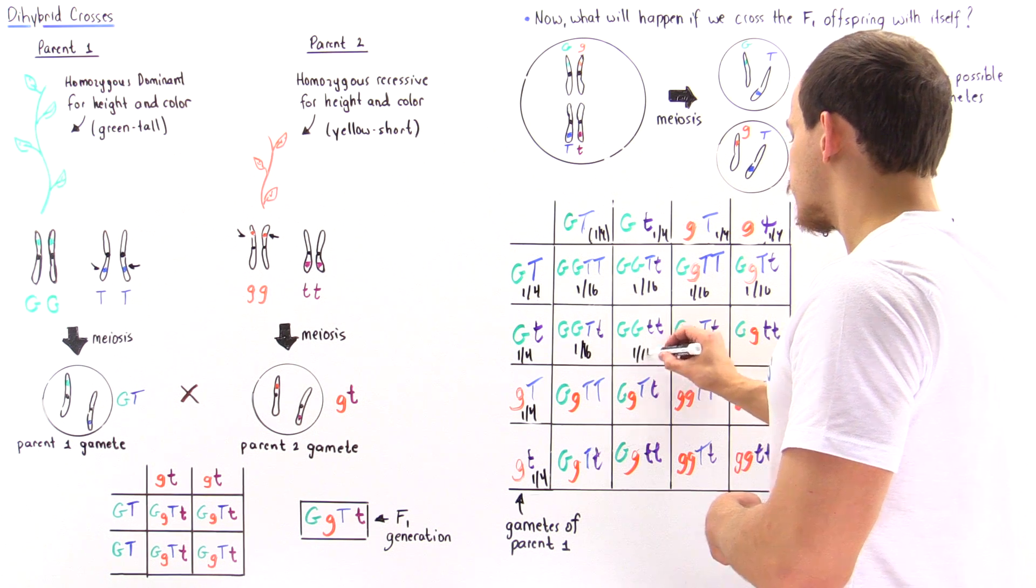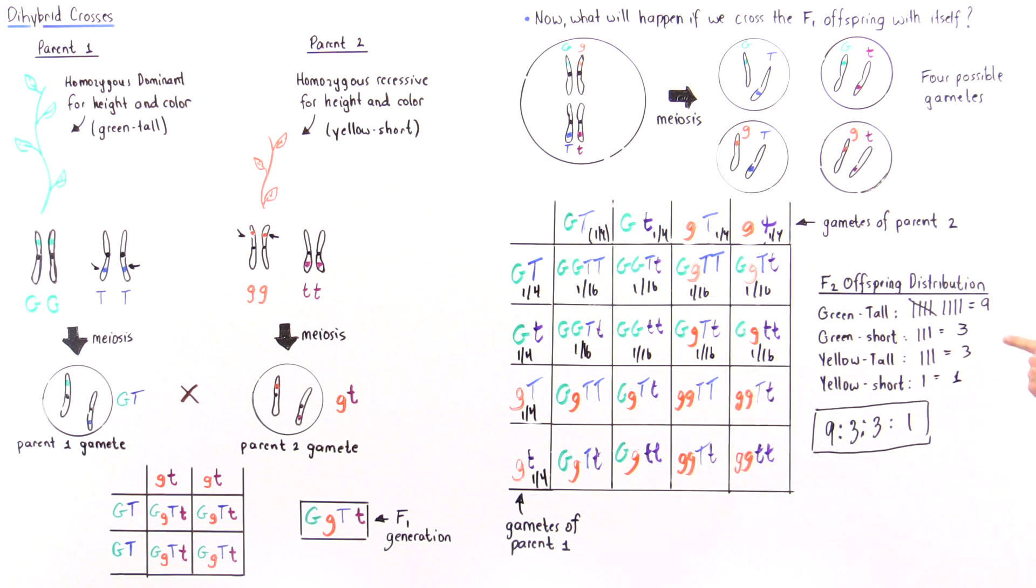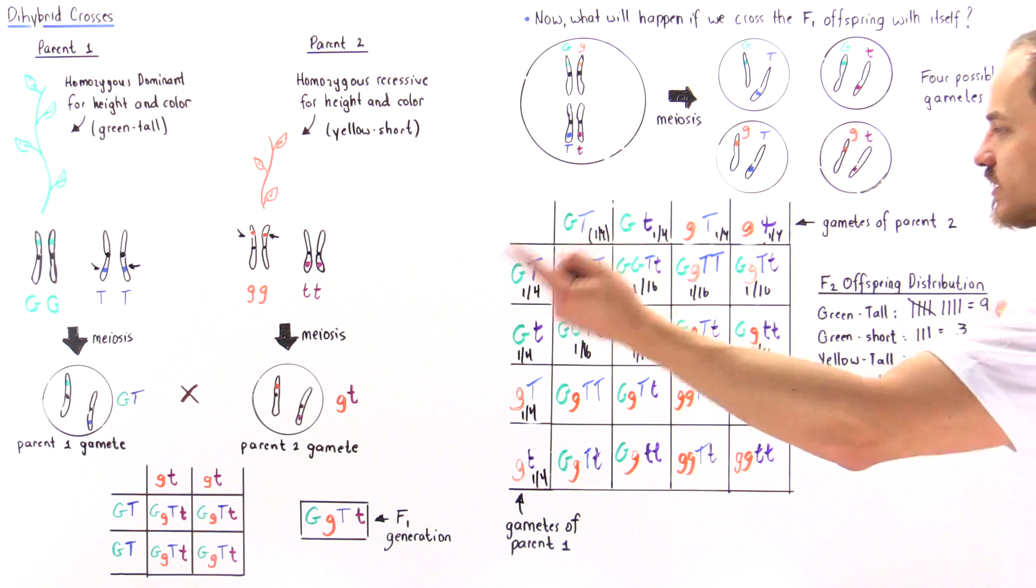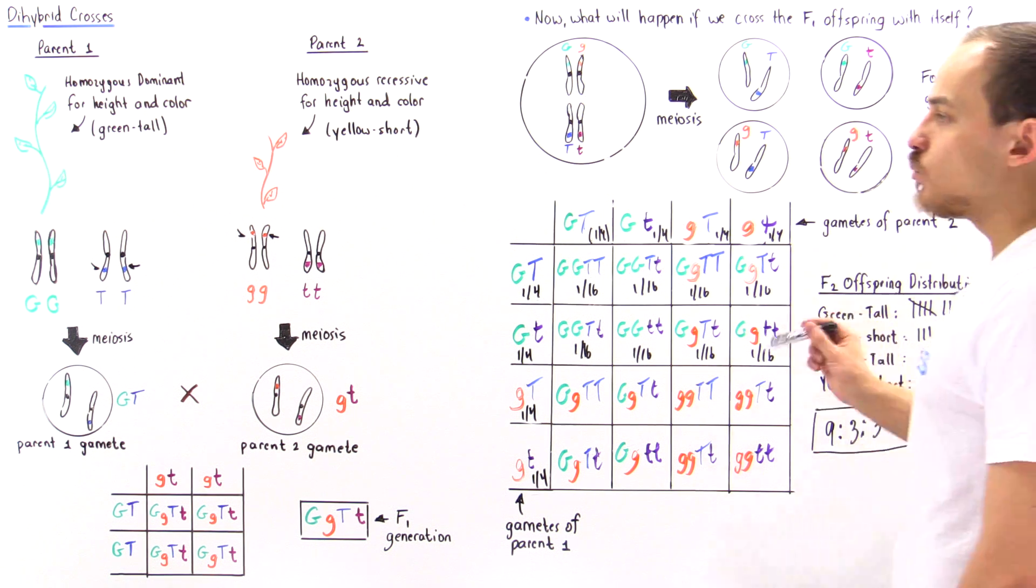So let's pretend that each one of these has 1/16 to save time. And if we actually tally up here, we have nine of them. And if we add up nine of these 1/16 values, nine times 1/16 gives us 9 over 16. Here it's 3 over 16, here it's 3 over 16, and here it's 1 over 16. So these are the probabilities. There is a 9 out of 16 chance that the offspring that will be produced will be green and tall. There's a 3/16 chance that our offspring will be green and short, 3/16 chance that it will be yellow and tall, and only one out of 16 probability that it will be yellow and short.